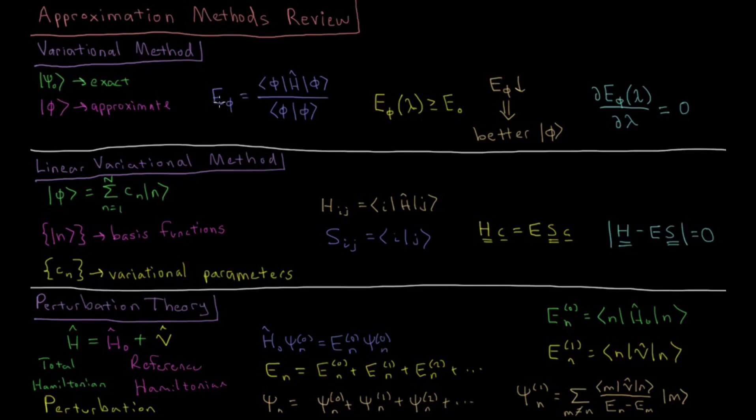The energy for this approximate wave function will be the standard expectation value for the Hamiltonian, the integral of psi star Hamiltonian acting on psi over the entire domain of the wave function. And if this wave function isn't normalized, we have the denominator which normalizes it through the integral of psi star psi.